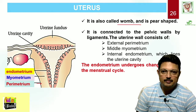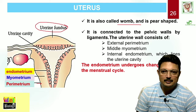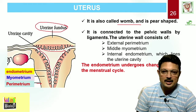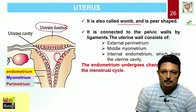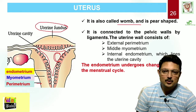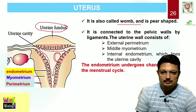The uppermost part is the fundus — the uterine fundic part — and the cavity inside is the uterine cavity, where implantation takes place. This is the womb that provides the space for the growth and development of the embryo into a fetus, and the fetus into a neonate.